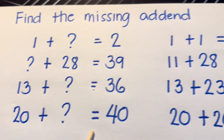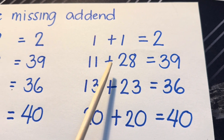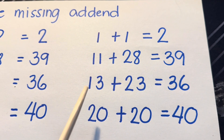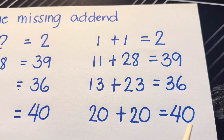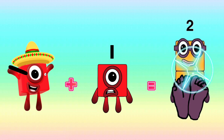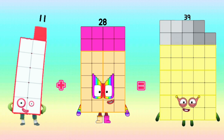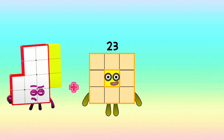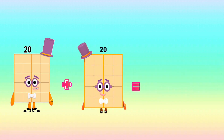Now, let's find the answers. 1 plus 1 is equals to 2. 11 plus 28 is equals to 39. 13 plus 23 is equals to 36. 20 plus 20 is equals to 40. And again: 1 plus 1 is equals to 2. 11 plus 28 is equals to 39. 13 plus 23 is equals to 36. 20 plus 20 is equals to 40.